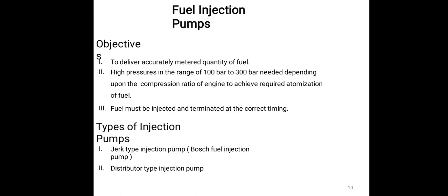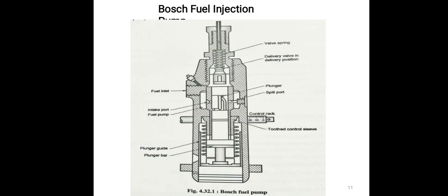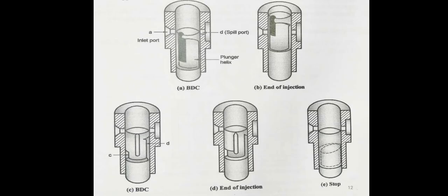Types of injection pump: jerk injection pump, distributor type injection pump, boost type injection pump. Components include plunger, guide, intake port, fuel pump plunger, split port, control wall, spring, fuel inlet. At BDC bottom dead center, end of injection occurs.